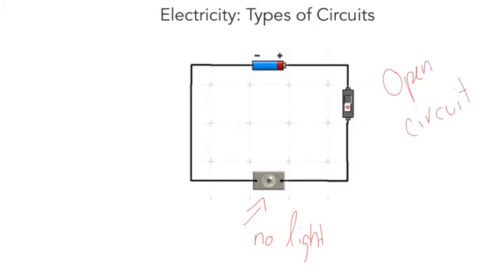Now, the opposite of an open circuit is a closed circuit, and as you might guess, a closed circuit is when you have the switch in the closed position, which we're going to see on the next image.